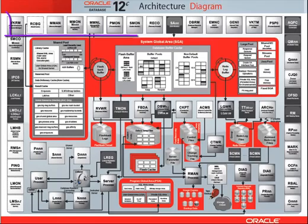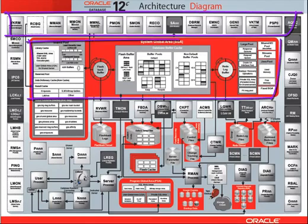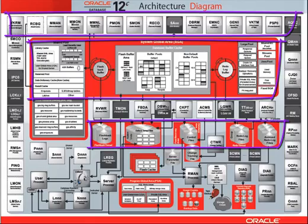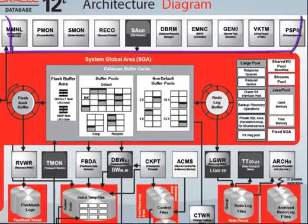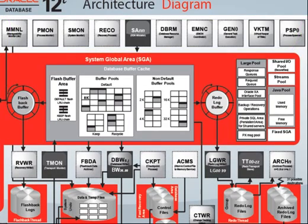This diagram shows you the main processes, memory and file structures used by a 12c version of an Oracle database and its associated instance. Square elements represent Oracle processes. Oracle processes can either run as OS processes or OS threads. If an Oracle process is surrounded by dotted lines on this graphic, it means it can run either as an OS thread or an OS process. If an Oracle process is surrounded by solid lines, it means it can only run as an OS process.